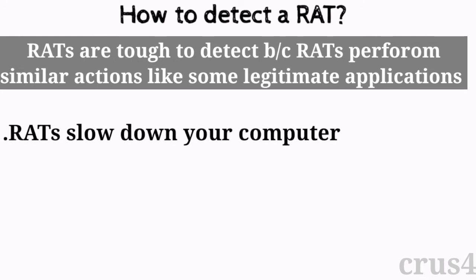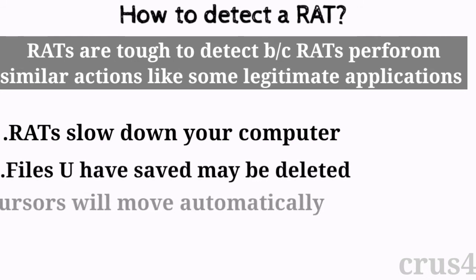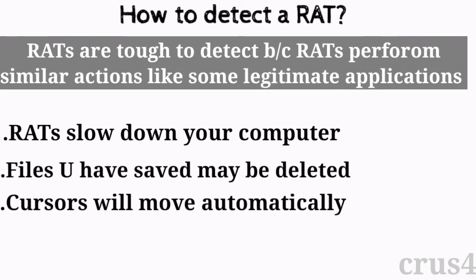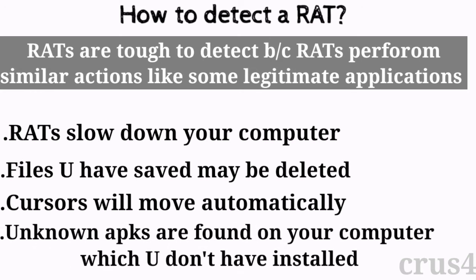These signs include: RATs slowing down your computer, files you have saved may be deleted, your cursor moves automatically, and unknown apps are found on your computer which you did not install. These are some signs which will help you detect RATs on your computer.